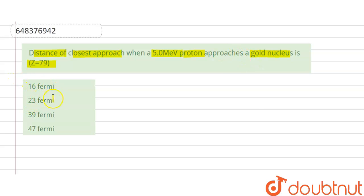Options are 16 fermi, 23 fermi, 39 fermi and 47 fermi.